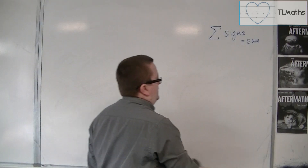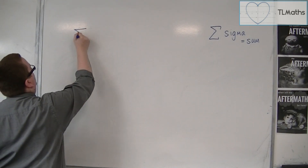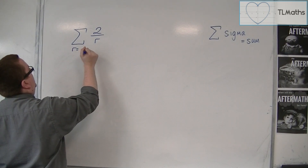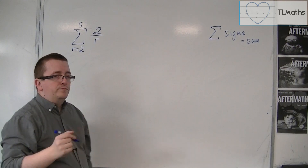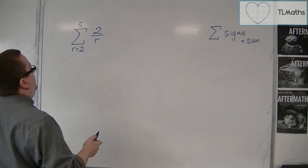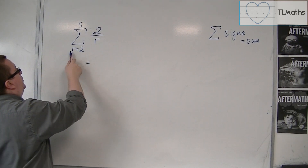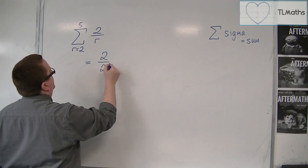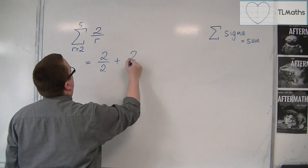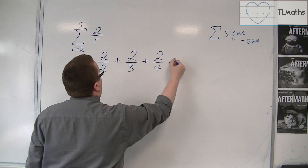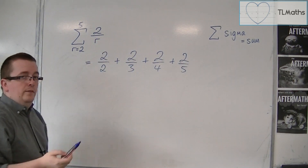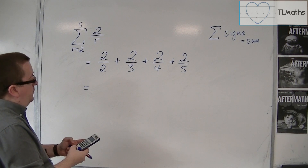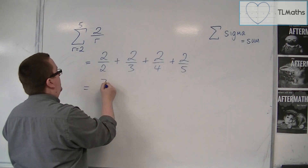Let's say we had the sum of 2 over r, and r is equal to 2 to 5. So this is telling me to substitute in the whole numbers from 2 to 5 into this and then add all the results together. So I'll have 2 over 2, plus 2 over 3, plus 2 over 4, plus 2 over 5, stopping at 5. That gives me 2 over 2, plus 2 thirds, plus 2 quarters, plus 2 fifths, and that gets me 77 over 30.